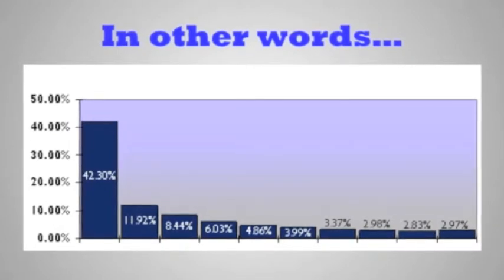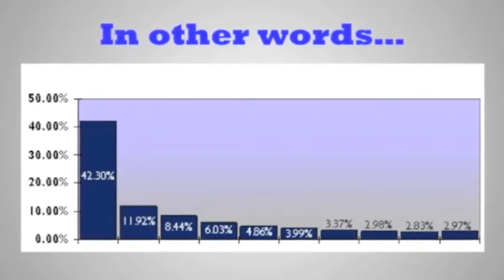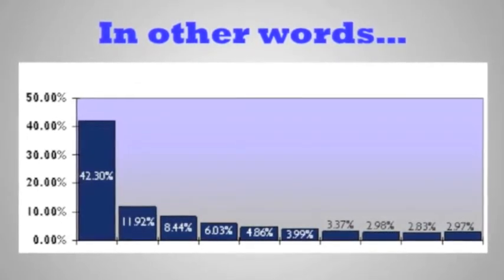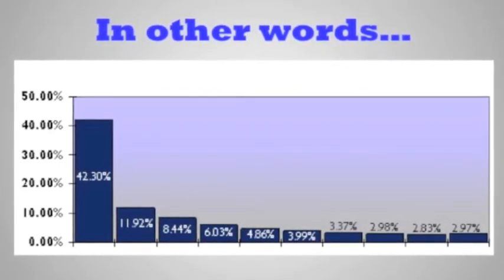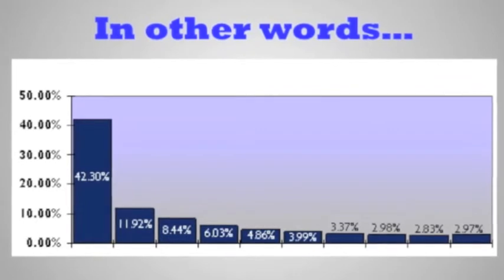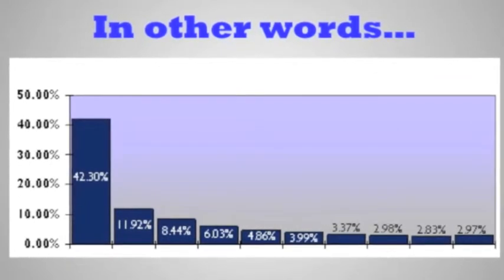In other words, 42.3% of the people click through on the first-place result, nearly 12% click on the second-place result, and a little more than 8% click through on the third. And the numbers continue to drop from there.